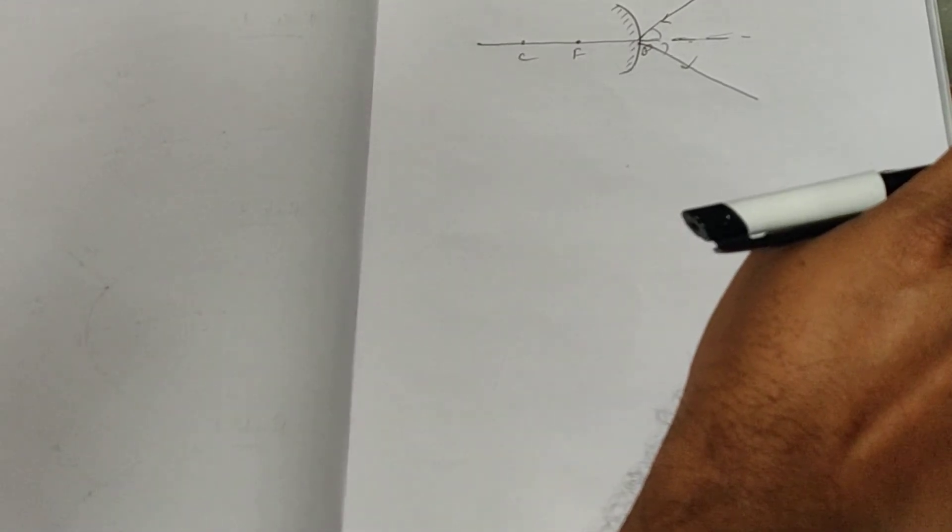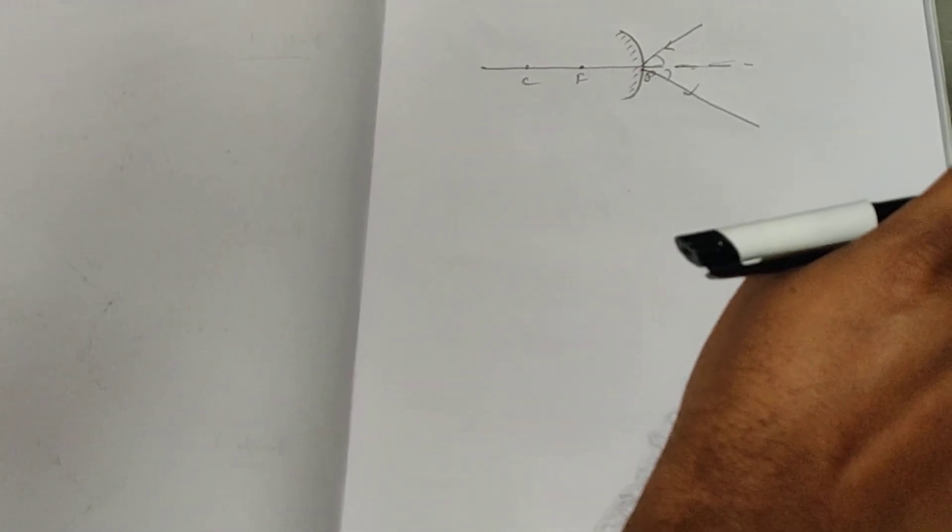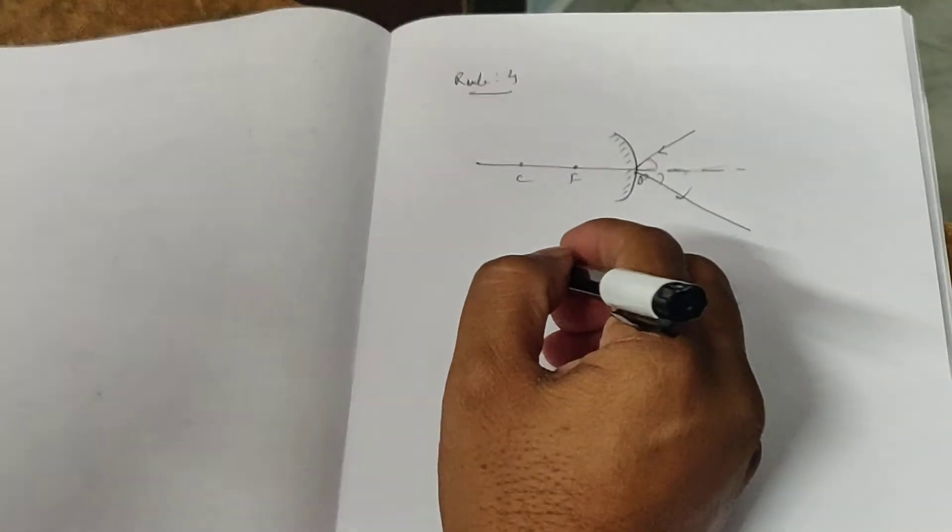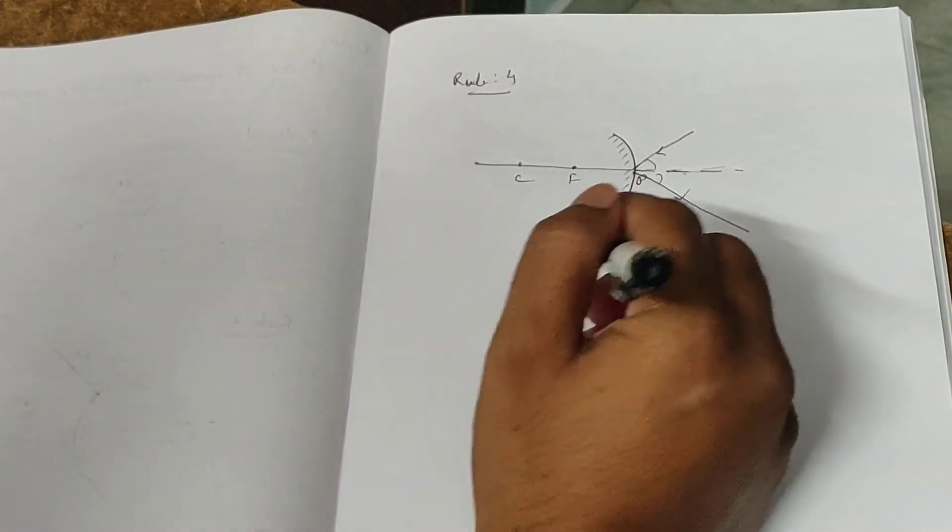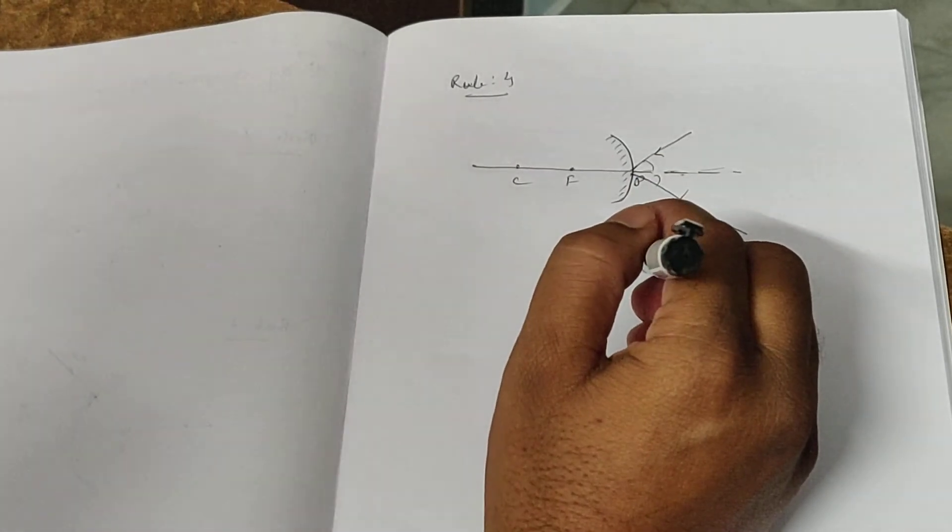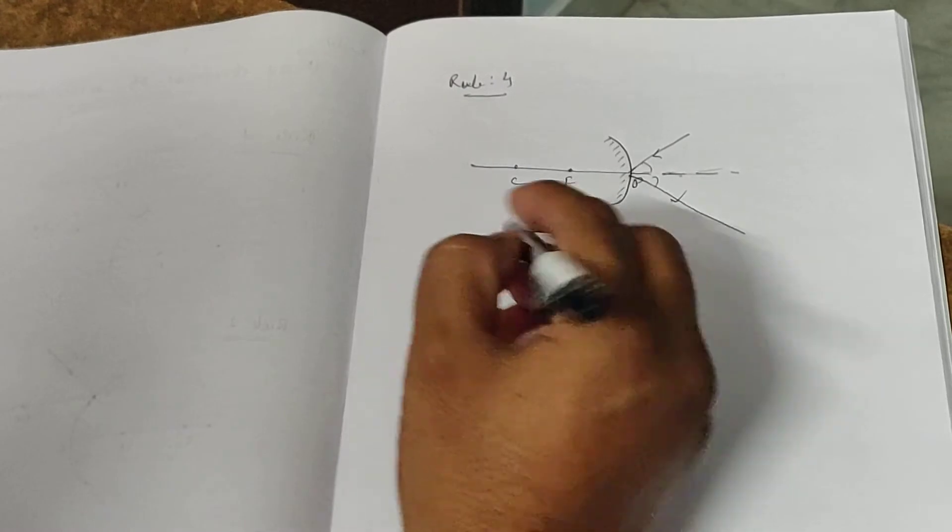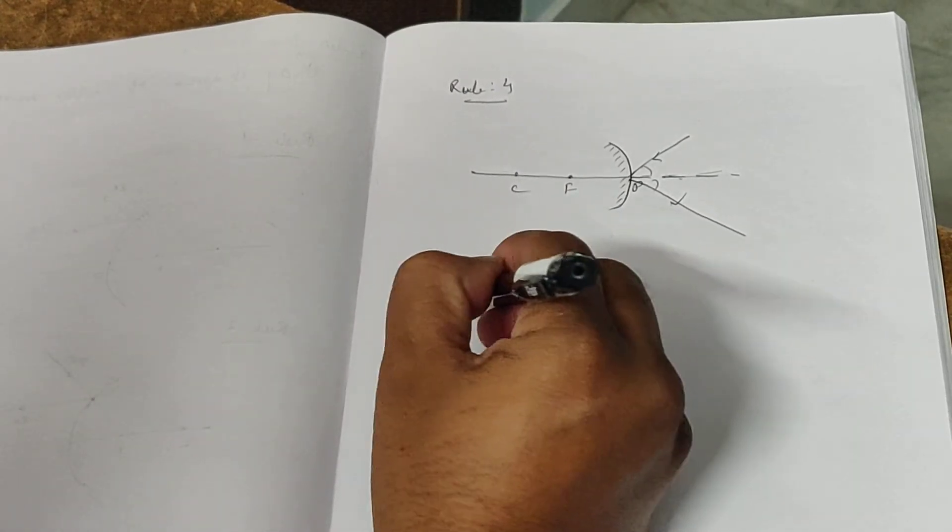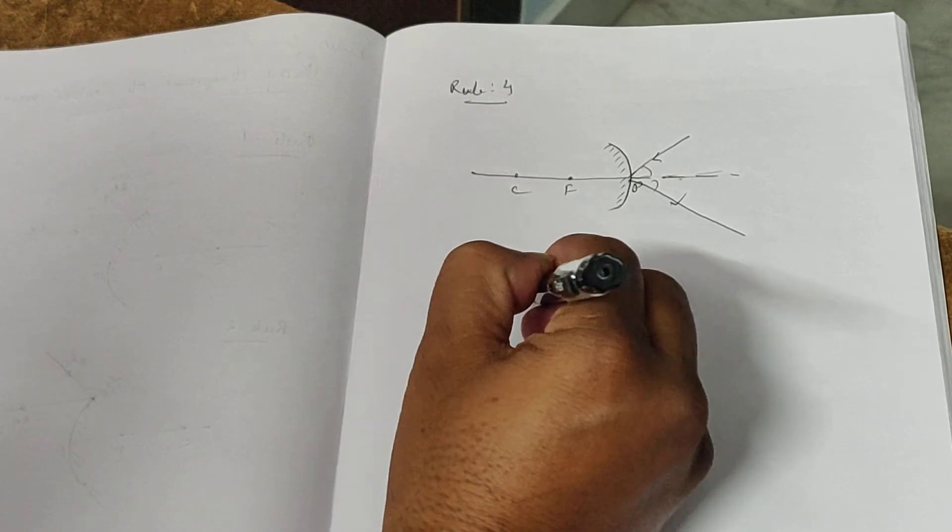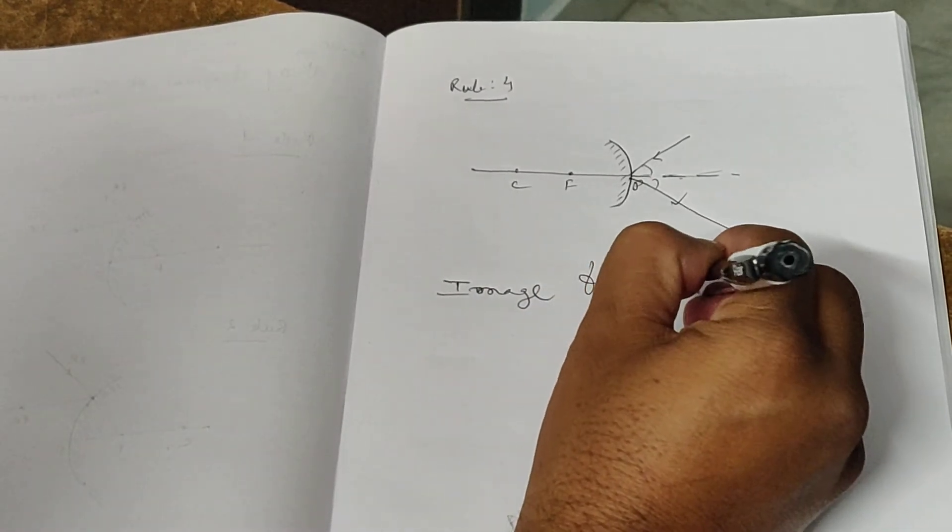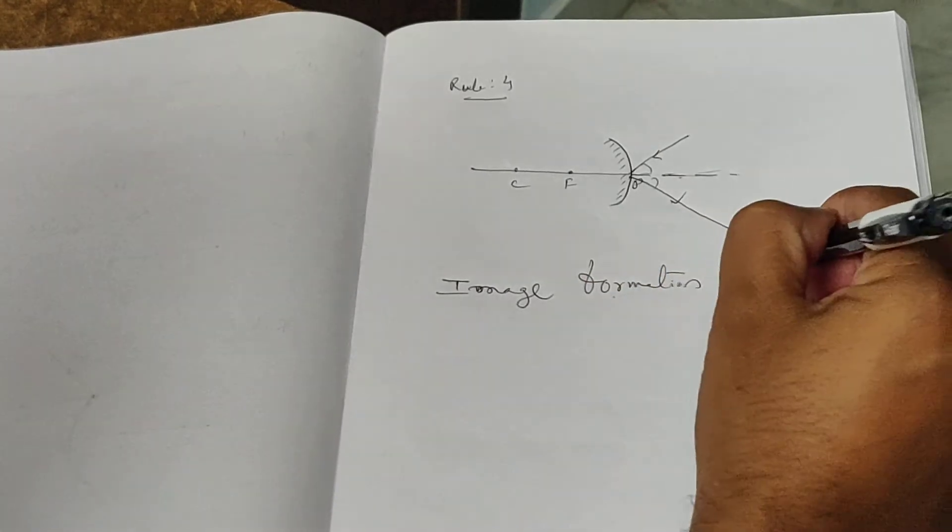These rules are very important for forming ray diagrams. Now let us find about image formation in convex mirror.